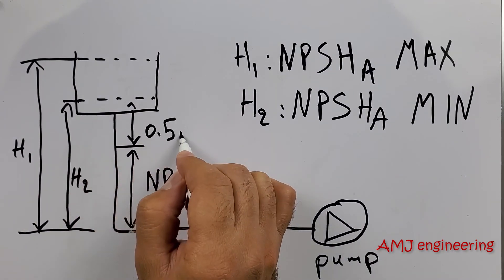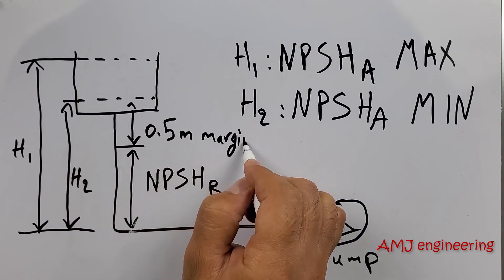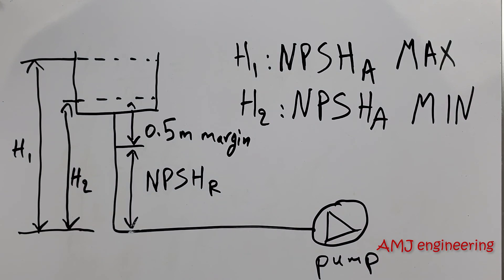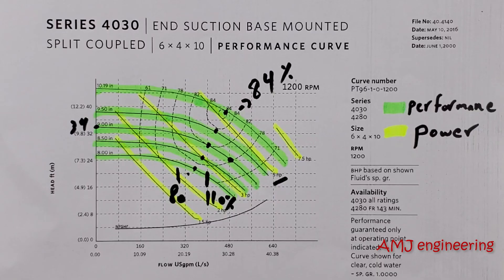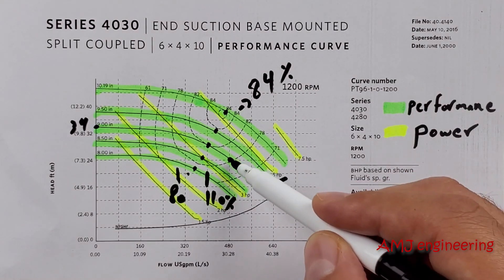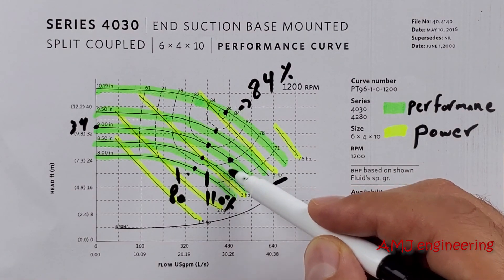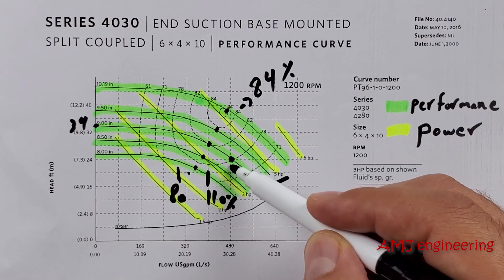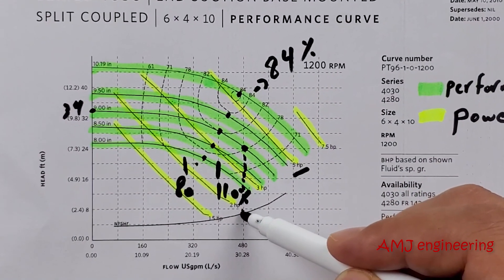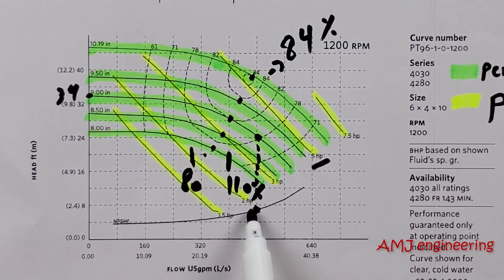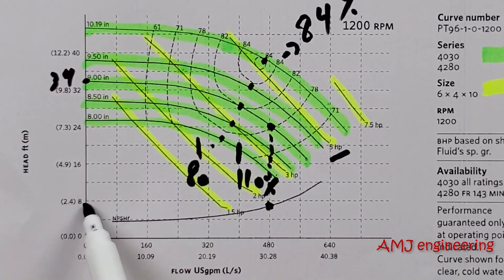Now, to be on the safe side, at least we have to keep a margin of 0.5 meters between H2 and the NPSH required. Looking back at our design example flow of 480 GPM, 7 feet of net positive suction head required at that condition. So you have to make sure that your suction head is greater than 7 feet to avoid cavitation.